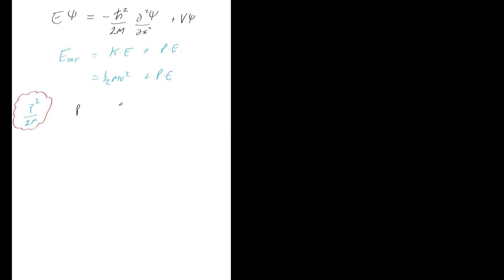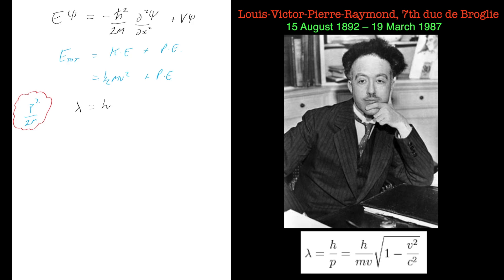Lambda equals the Planck constant divided by the momentum, and you can write this as momentum equals Planck constant over lambda if you wanted to. That's going to be another equation we're going to need. De Broglie related the mass of a particle to the wavelength of a particle, so you can see how it's all incorporated into the same kind of rules.